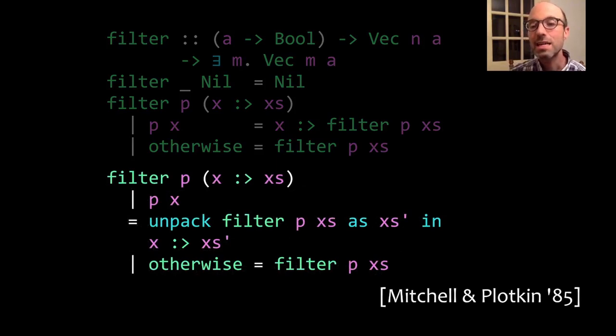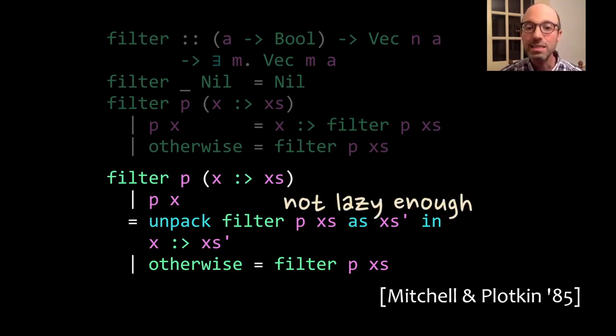We might imagine taking our nice surface language that doesn't have any packing or unpacking and desugaring it into a core language that does have packing and unpacking. We might imagine taking the code toward the top of this slide and getting the code toward the bottom. On the bottom here, we have this unpack. This is based on ideas from Mitchell and Plotkin from their POPL 1985 paper. We can have unpack, which we would run on this recursive call to filter. It would extract out the length of this recursive call, the length of that filtered vector xs′, and then it would make that length available for use in the call to cons. This works, but this destroys our laziness. For this to work, we need to actually evaluate this recursive call before cons. That's no good. This is not lazy enough.